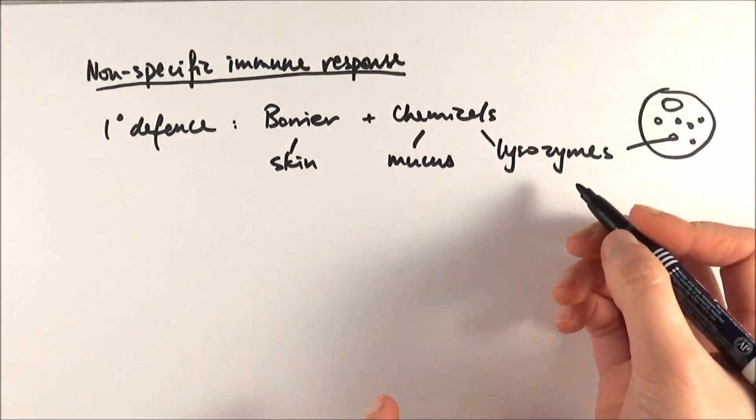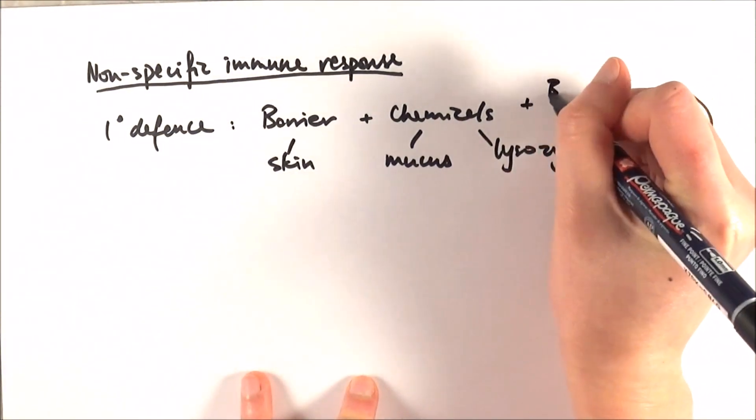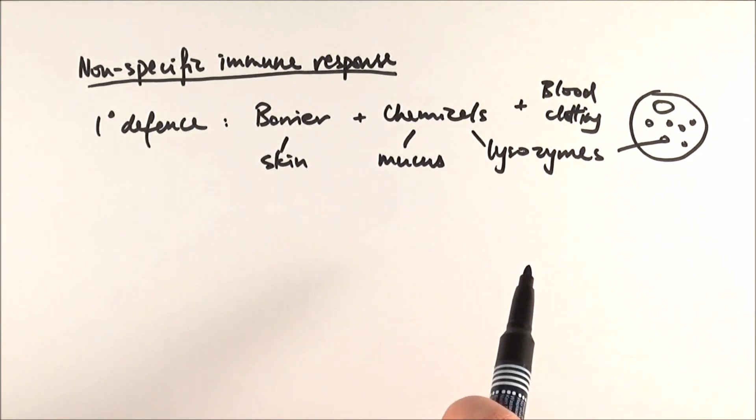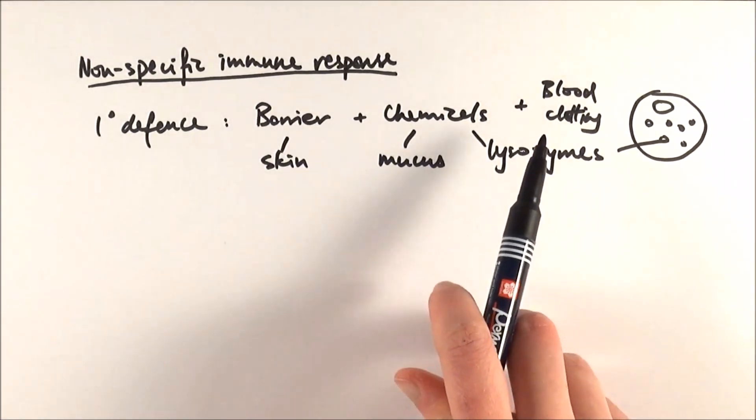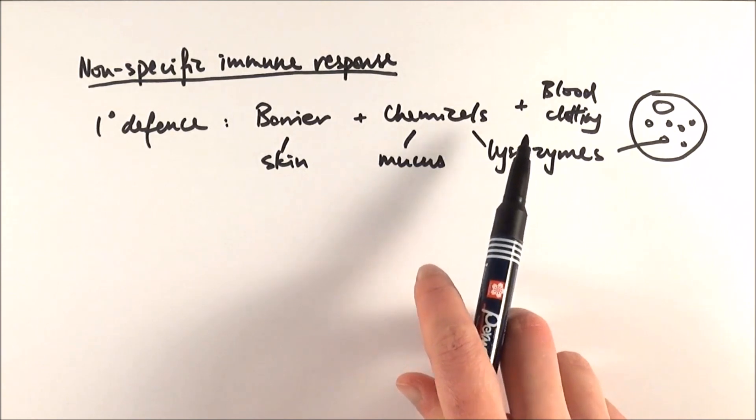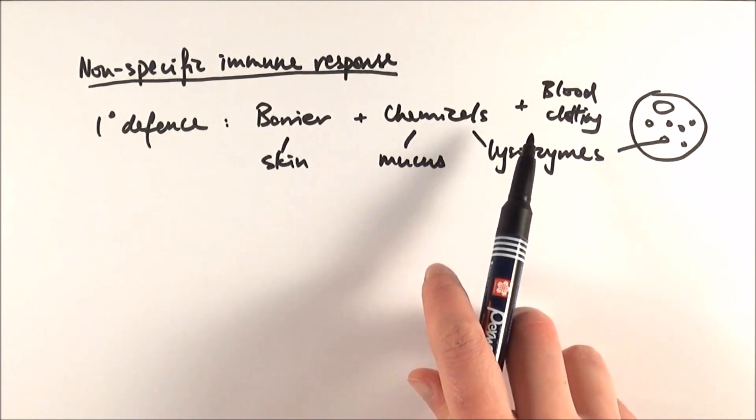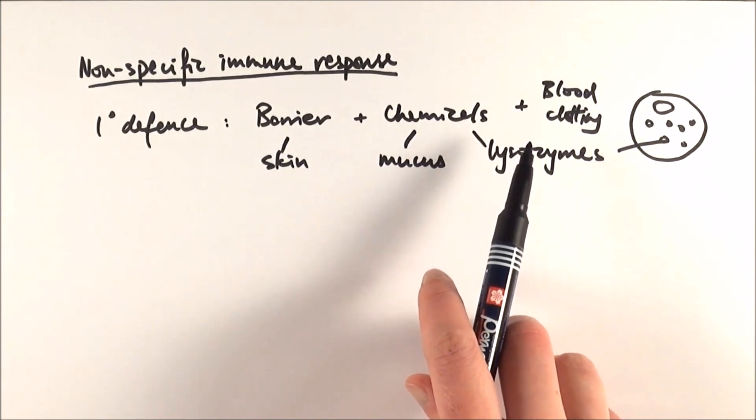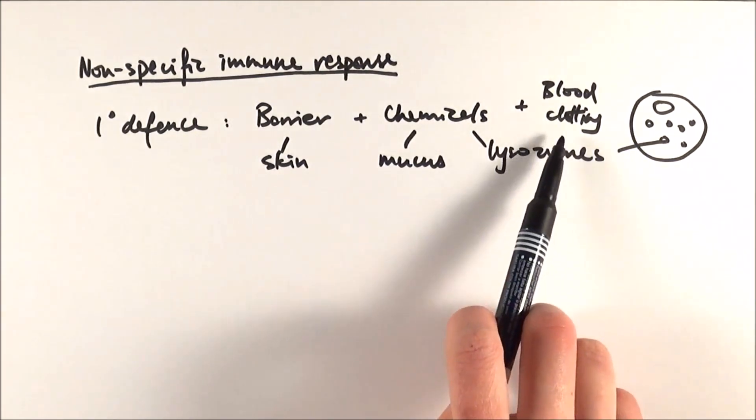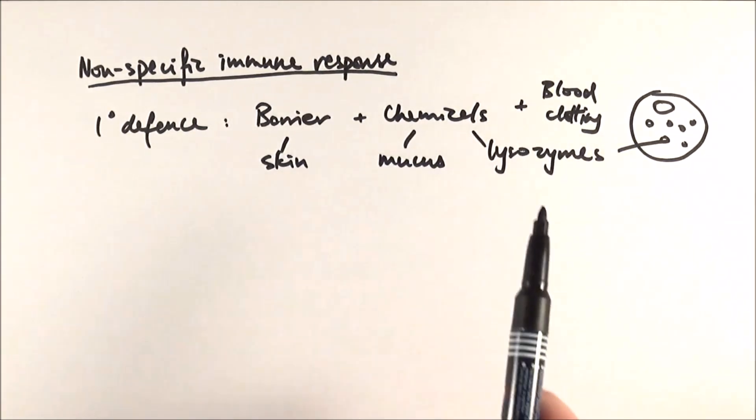We can also have blood clotting. If you have a cut or you fell over, the body is really good at forming a blood clot which blocks the wound to stop any pathogen from getting into the bloodstream. There is a blood clotting cascade which you do need to know.